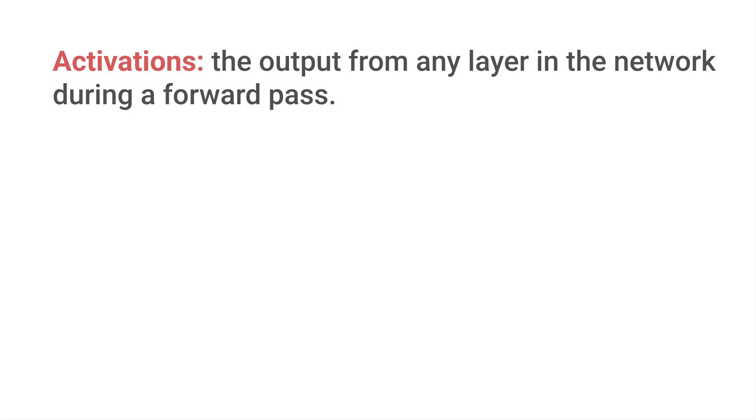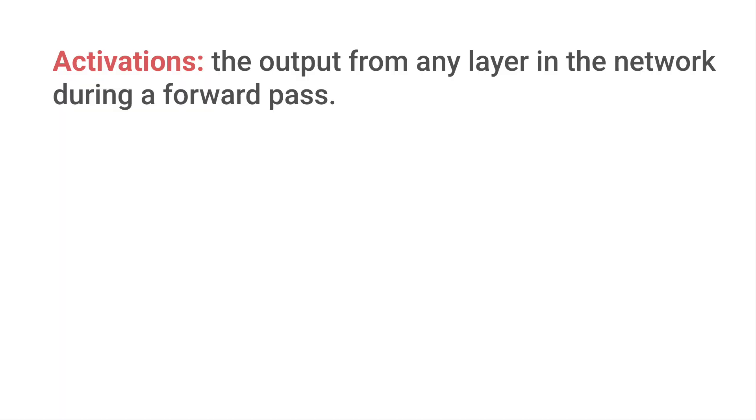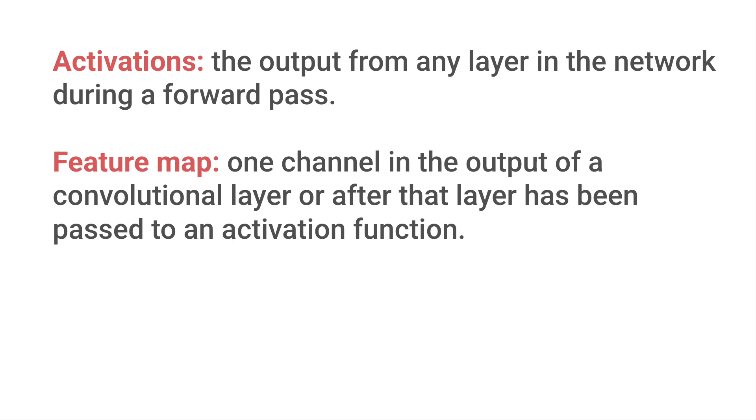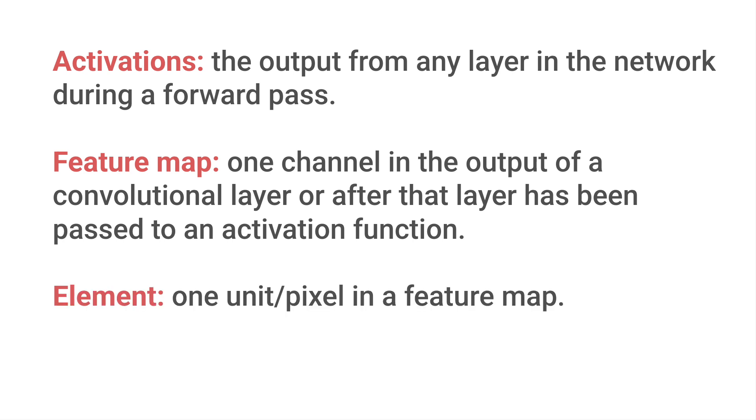Before we start, let's clarify a few terms. When I talk about activations I mean the output from any layer in the network during the forward pass — this could be the raw output from convolutional layers or after we pass that to an activation function. A feature map is one channel in the output of a convolutional layer or after that layer has been passed to an activation function. An element is one unit or pixel in a feature map. We can talk about activated feature maps or activated elements if they have been populated by a forward pass, but we can also just refer to them as feature maps or elements.